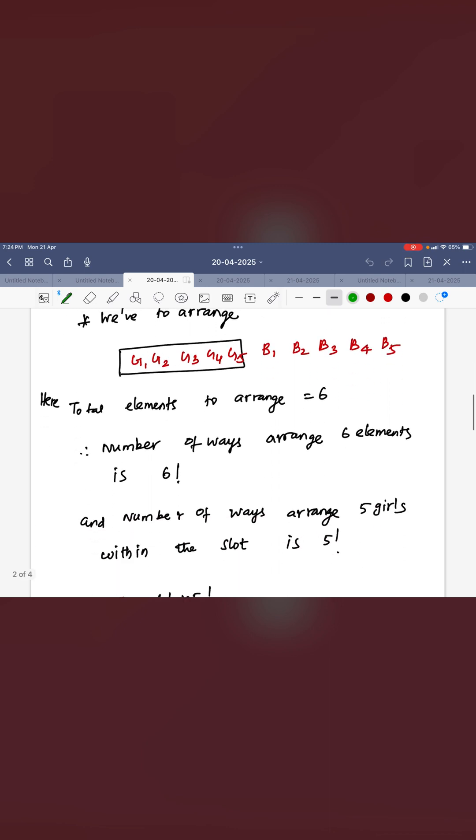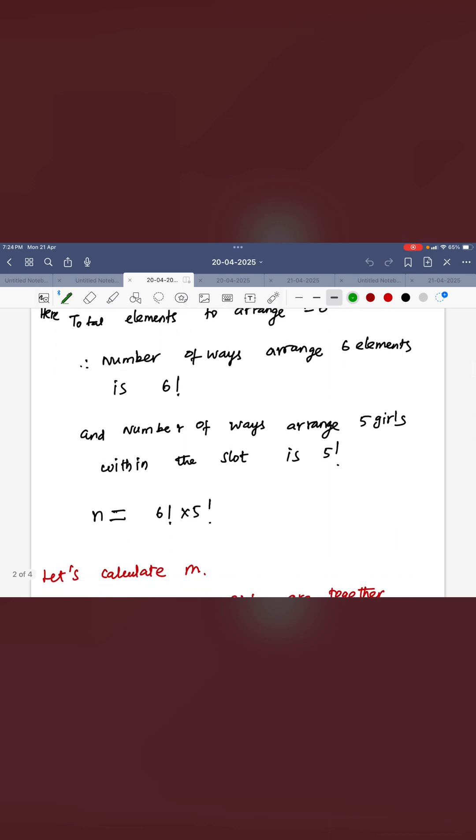There are 6 factorial ways. So you can see the internal arrangements of the 5 girls that is 5 factorial therefore total number of ways is N is equal to 6 factorial into 5 factorial.